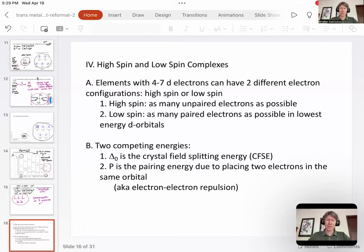And here's where we talk about the two competing energies, which is delta zero, the crystal field splitting energy, and P is the pairing energy due to placing two electrons in the same orbital.